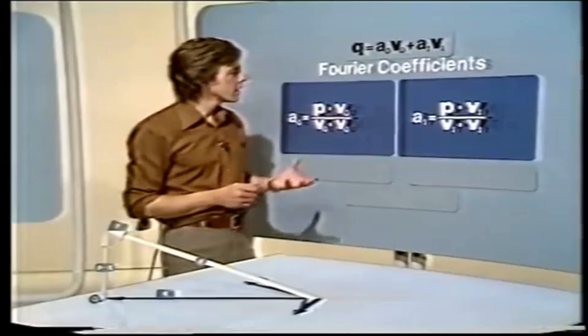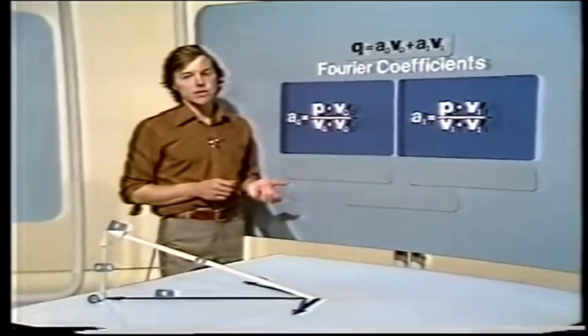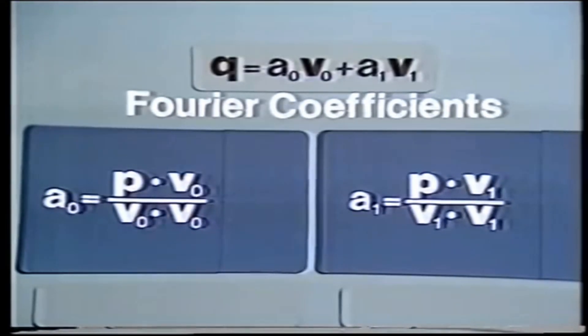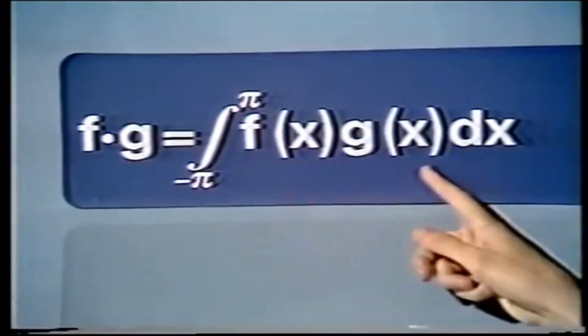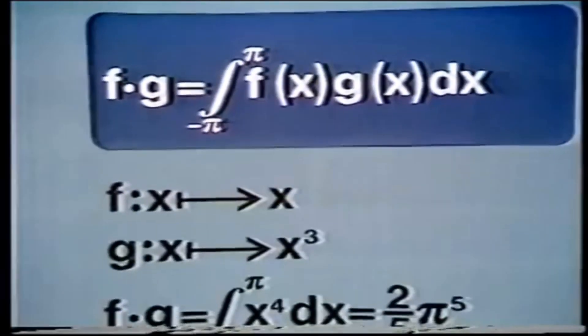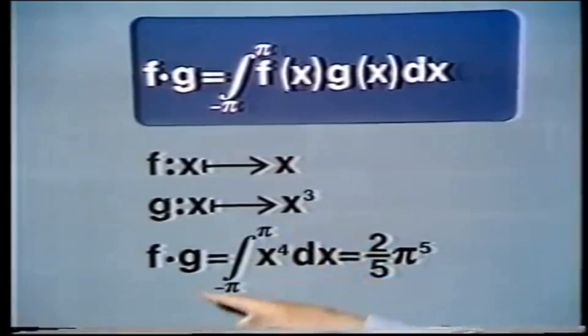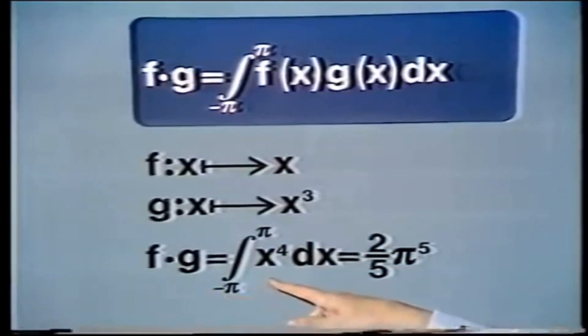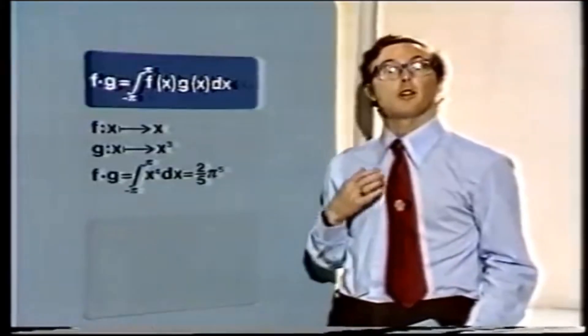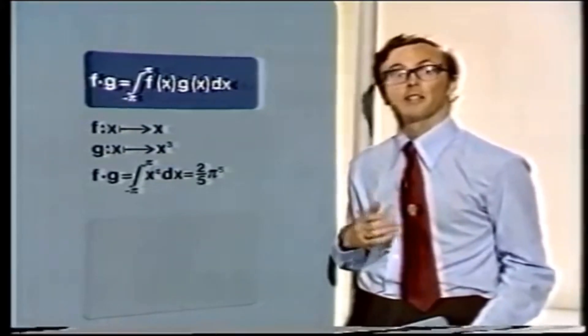If F and G are functions, we define their dot product like this: F dot G is got by multiplying them together and integrating from minus pi to pi. So for example, if F of X is X and G of X is X cubed, then the dot product F dot G is the integral of their product X to the fourth, and that's just 2/5 pi to the fifth. Now we know how to define the dot product, we can say when two functions are orthogonal — that's when their dot product is zero.